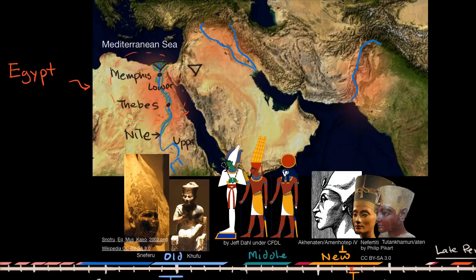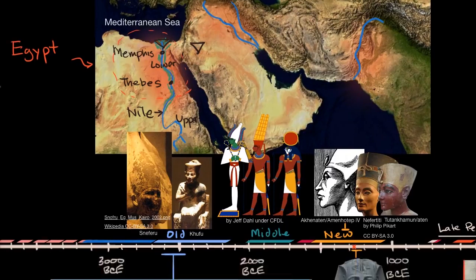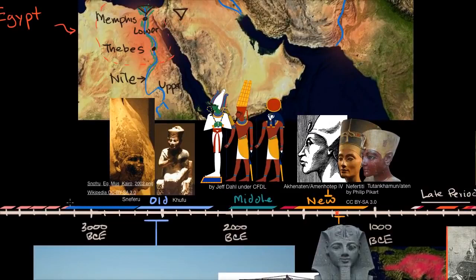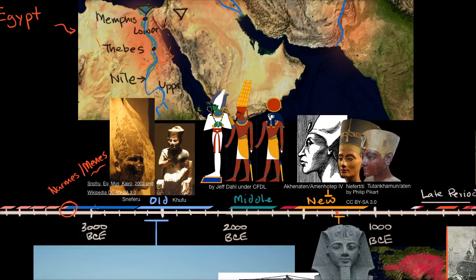People lived in this valley for thousands of years, but when we talk about ancient Egypt as a civilization, we formally date it to around 3150 BCE. This is when upper and lower Egypt were first united under a king — sometimes called Narmer, sometimes Menes — who unified upper and lower Egypt into an empire.